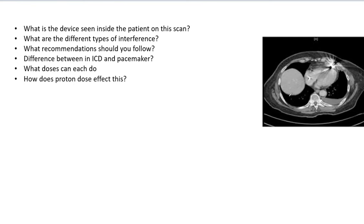What are the different types of interference? What recommendations should you follow? What is the difference between an ICD and a pacemaker? What doses can each do? How does proton dose affect this?